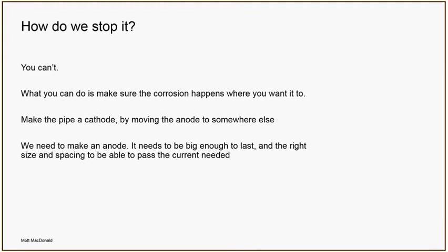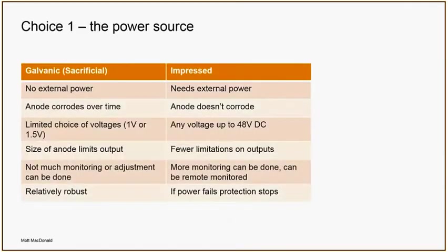We make the pipe a cathode — that's the bit that doesn't lose metal — by sticking another anode somewhere else. We need to make the anode big enough to last, the right size, and we need enough of them to pass the current needed to protect the steel. Two choices: you can either have a galvanic system, where you stick something like zinc or magnesium in the ground and it corrodes to protect the pipe, or you can have an impressed current system where you've got an external power supply.